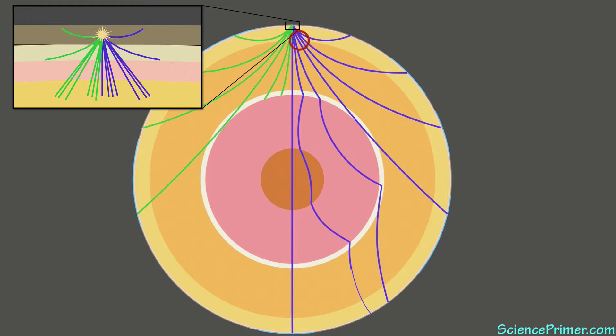As the waves move deeper into the Earth, they encounter another discontinuity 670 kilometers below the surface due to a change in the composition of the minerals that make up the upper and lower mantle. The density of the mantle increases here resulting in a speeding up of the waves.